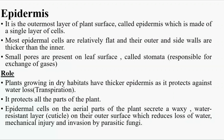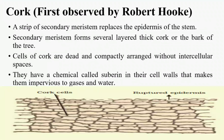Cork cells were first observed by Robert Hooke. These are dead cells. After the epidermis, secondary meristems develop, keep growing, and replace the epidermal cells as the epidermal cells rupture. This leads to the formation of a new type of dead cell called cork. The secondary meristem forms cork, which is also known as the bark of the tree.